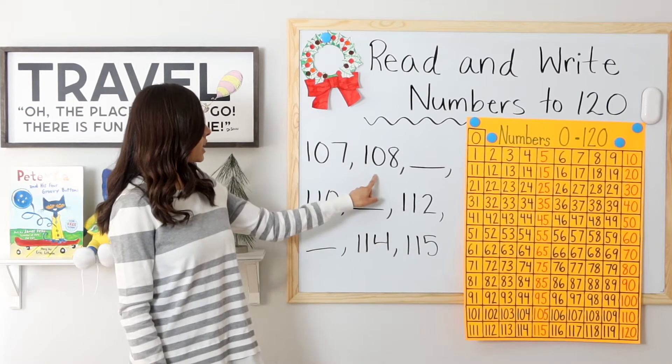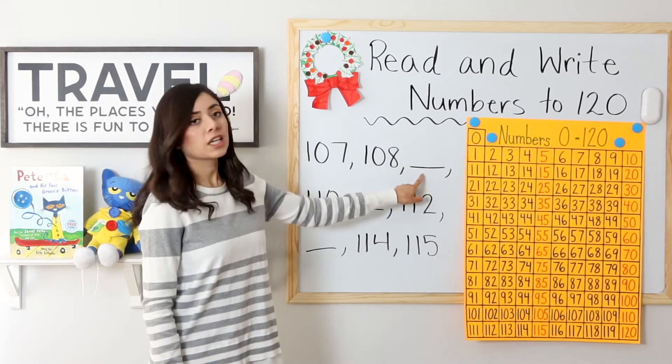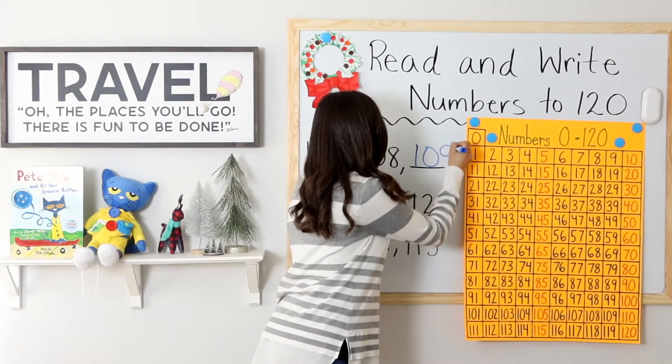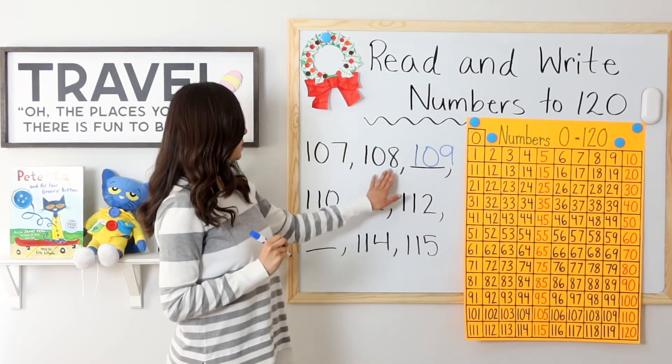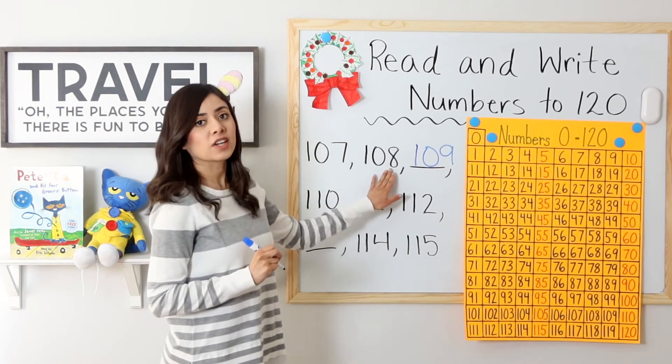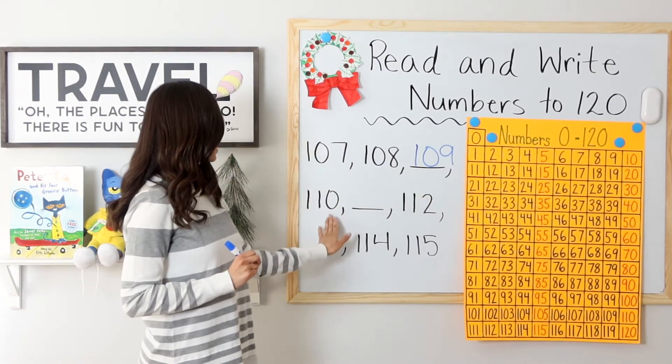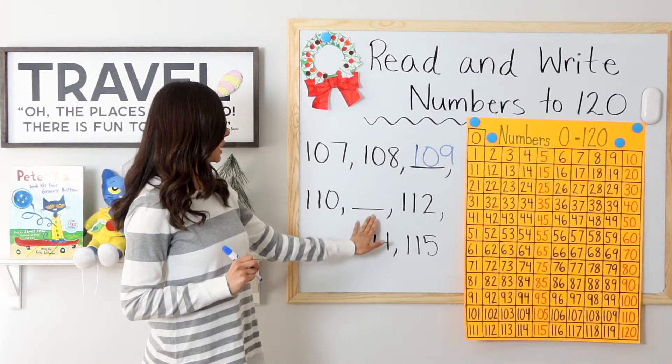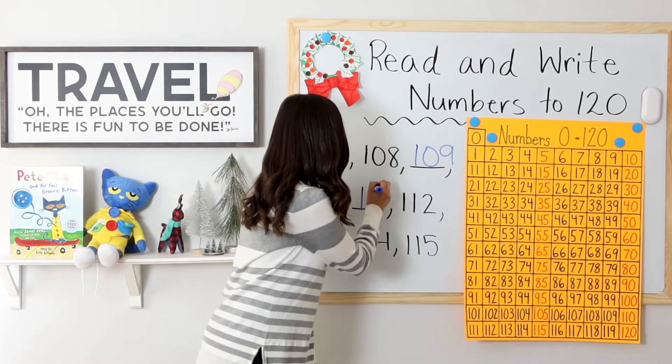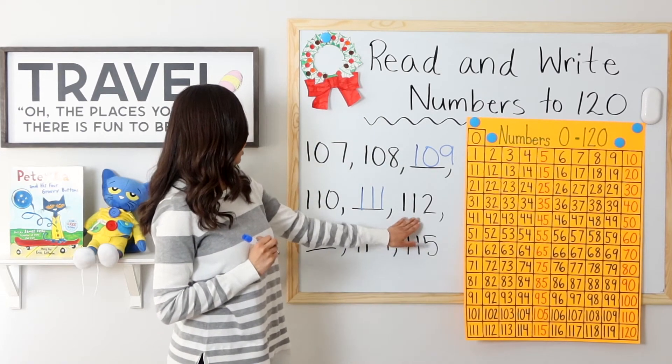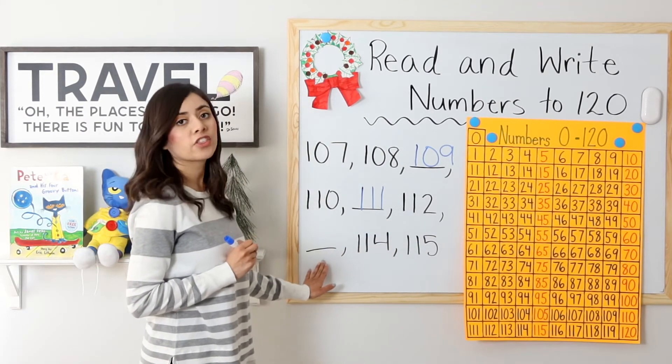107, 108, 109. Because I have been practicing, I know that 109 comes after 108. Ready? So 109, 110, 111, 112.